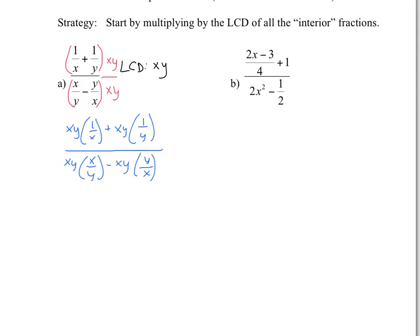So in our case, for example, this x and x cancel out, right? And what you're left with is 1 times y, which in our case gives us y. In this case, the y's cancel out, and what you're left with is x times 1, which would be plus x. So notice that now there are no fractions on your numerator. We like that a lot better.